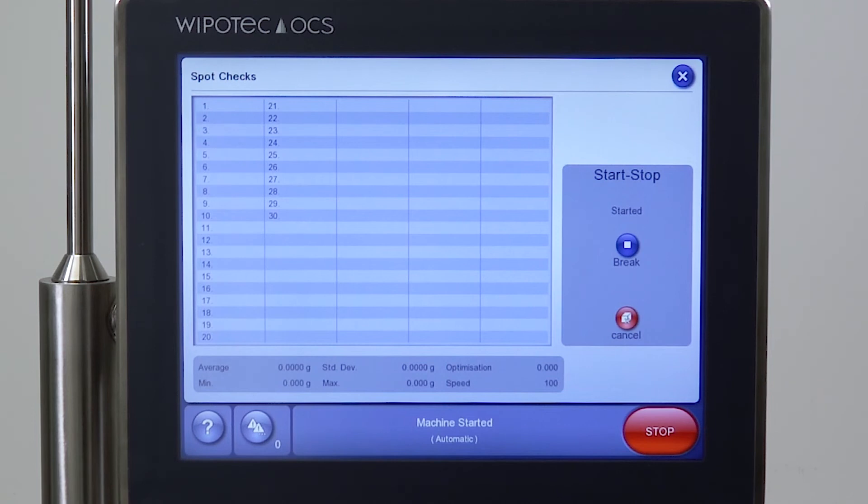Once the checkweigher is started, we place the weigh stone of 50 grams onto the weighing conveyor and we're starting now to initiate 30 times the weight reading of that precise weigh stone of 50 grams.